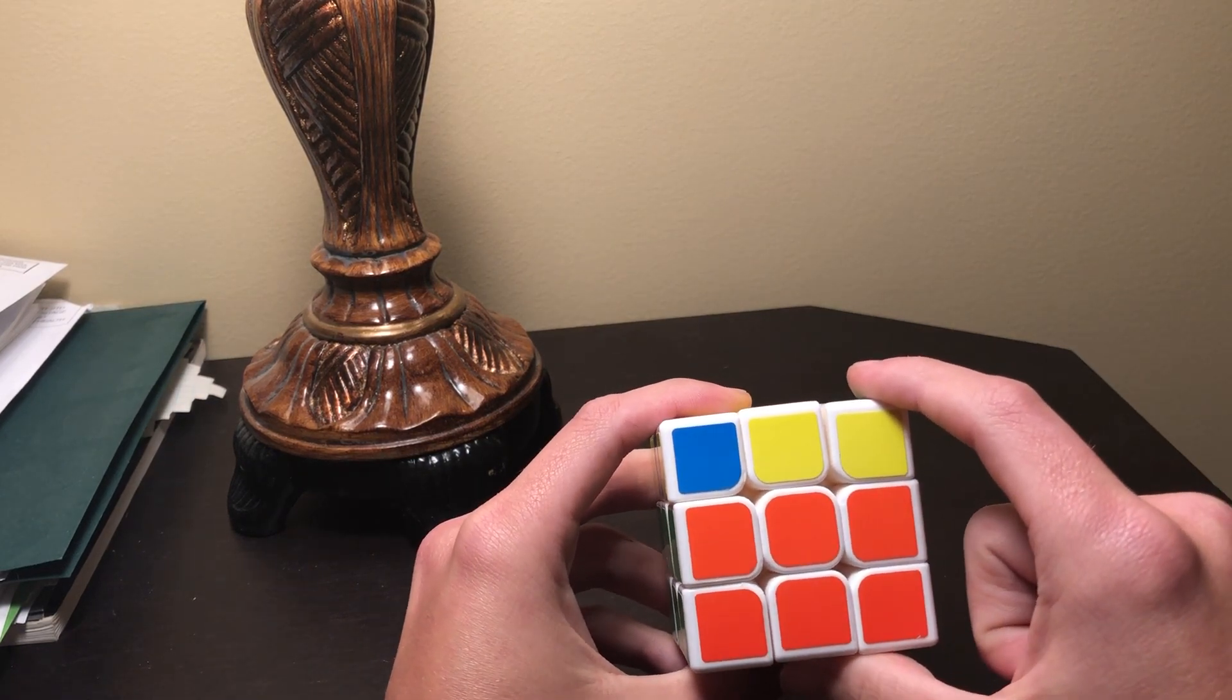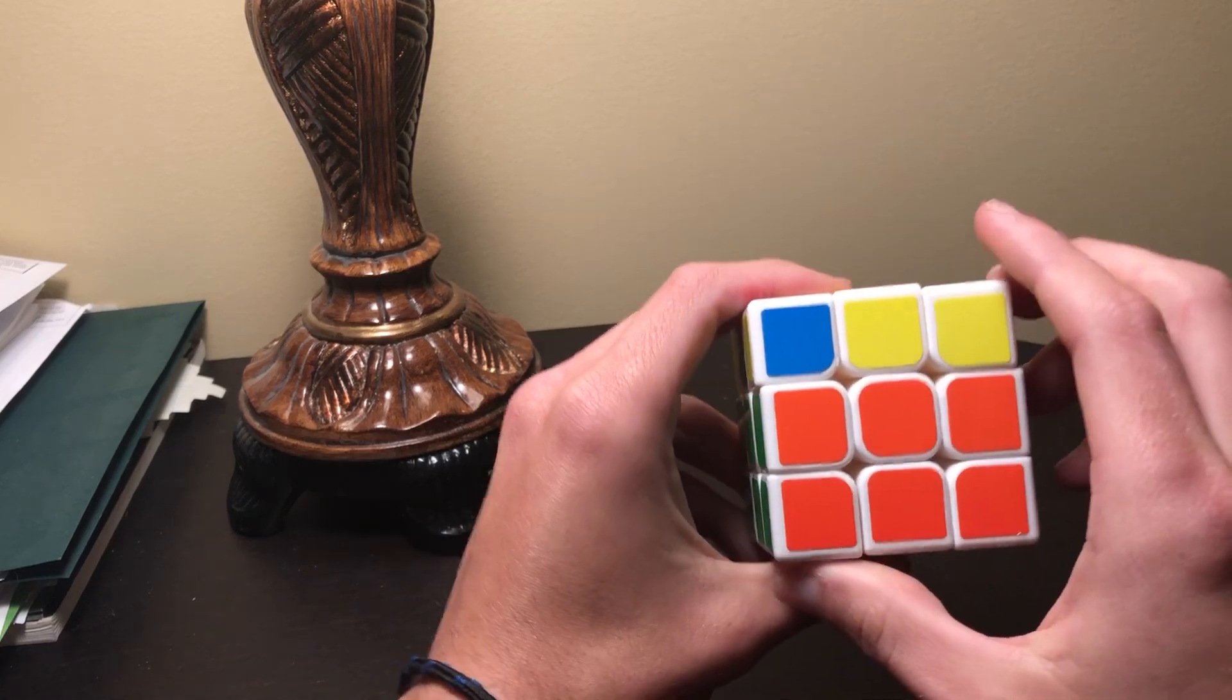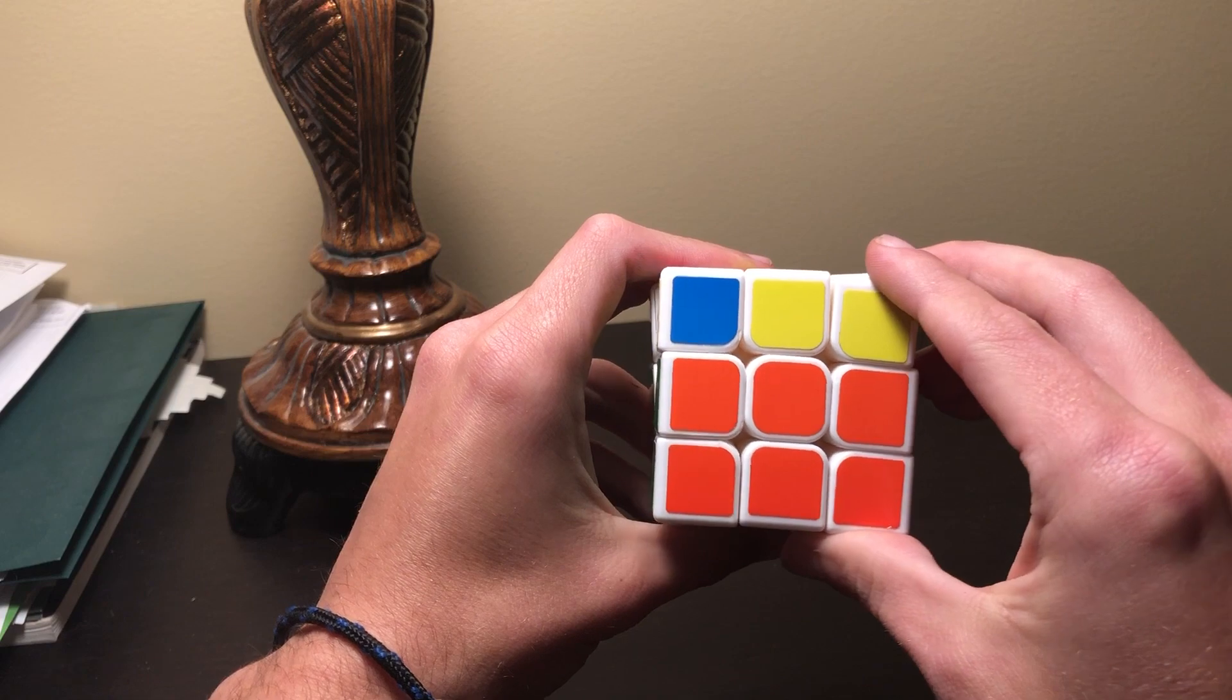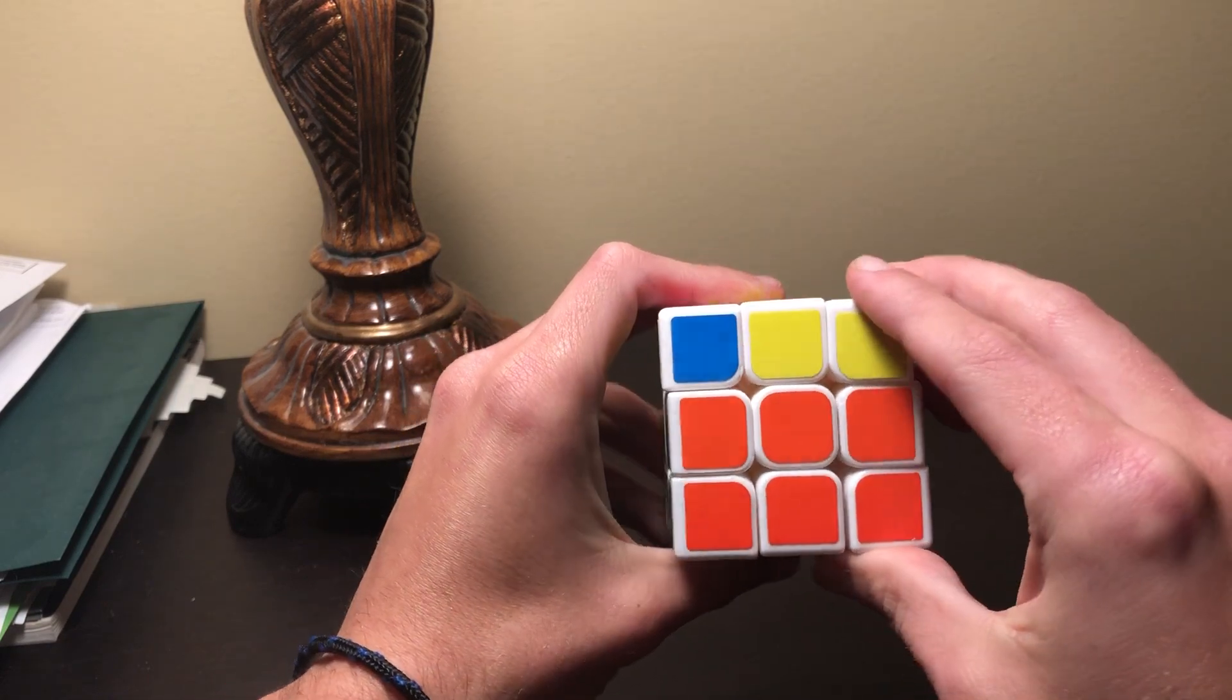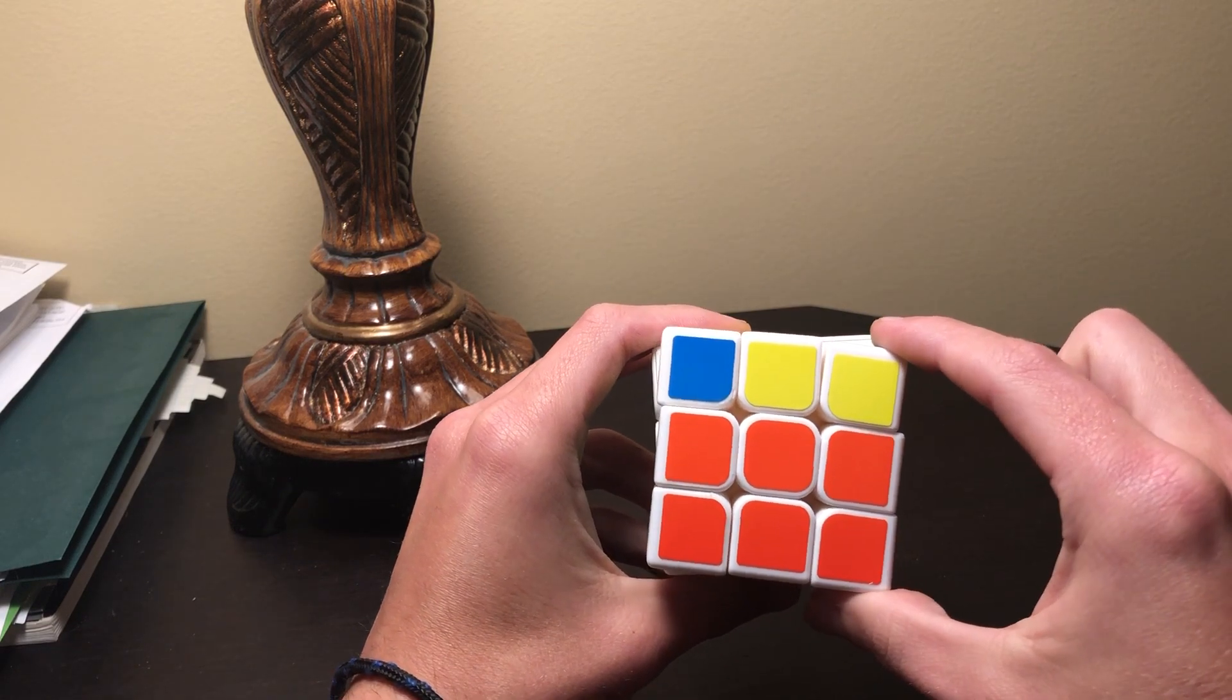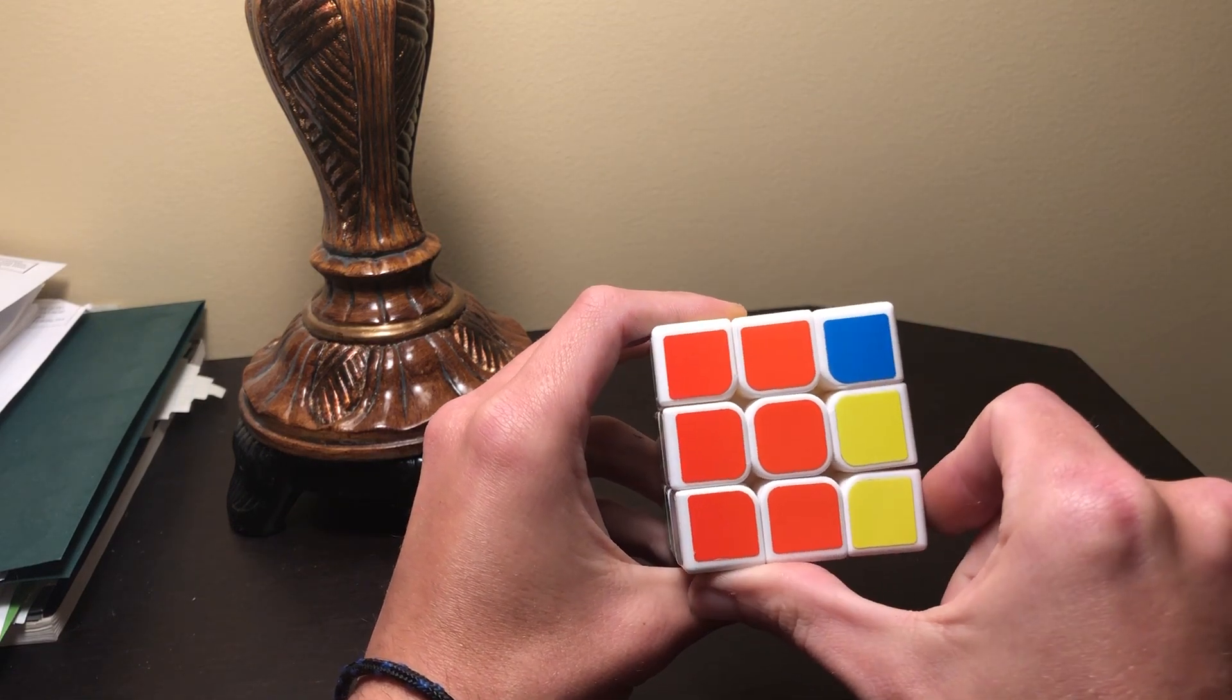The first one is going to be our front turn. Our front is whatever is facing right towards you. Right here, I have this part that's facing right towards me. That's going to be my front. So if I say turn the front, you're going to just rotate it once clockwise.